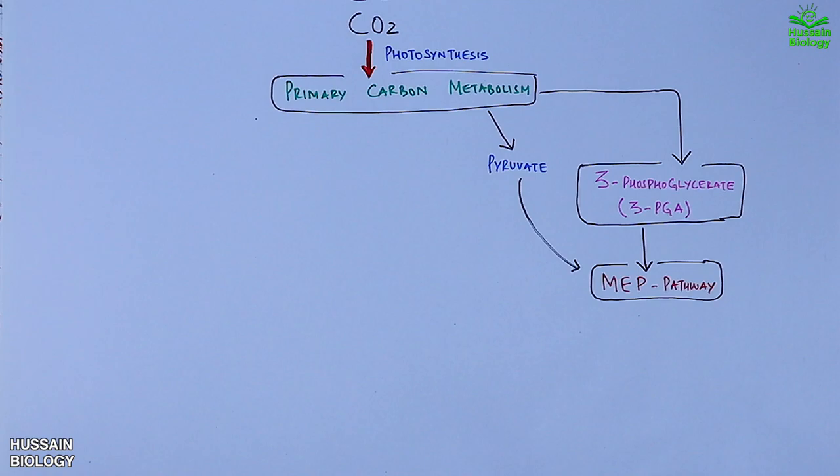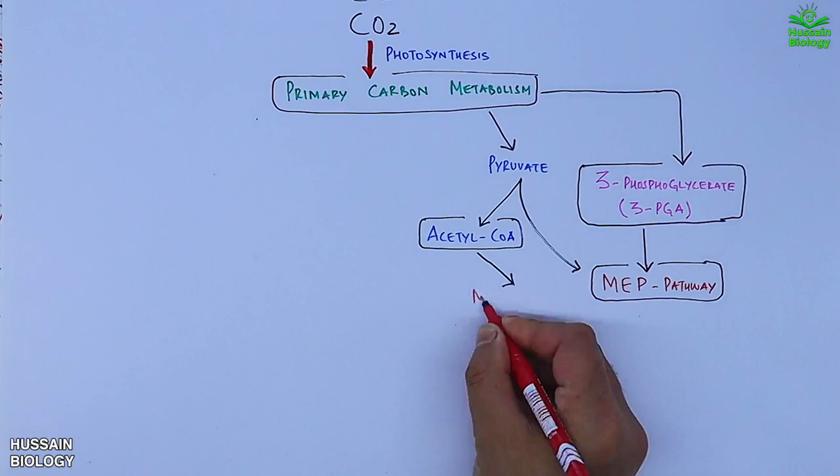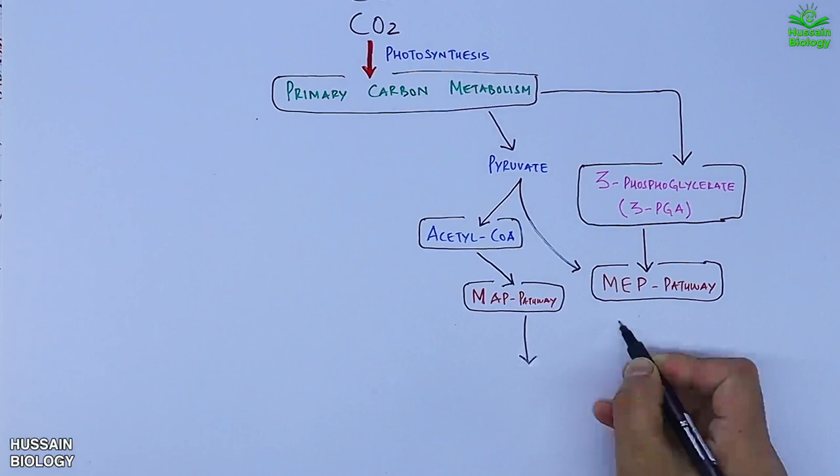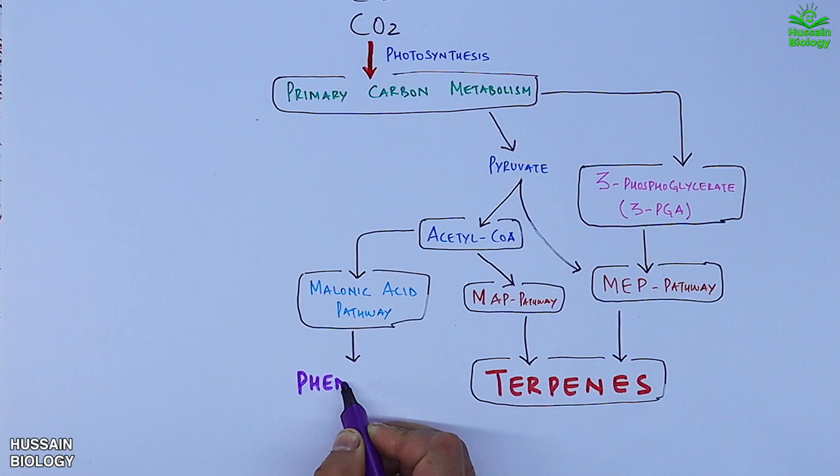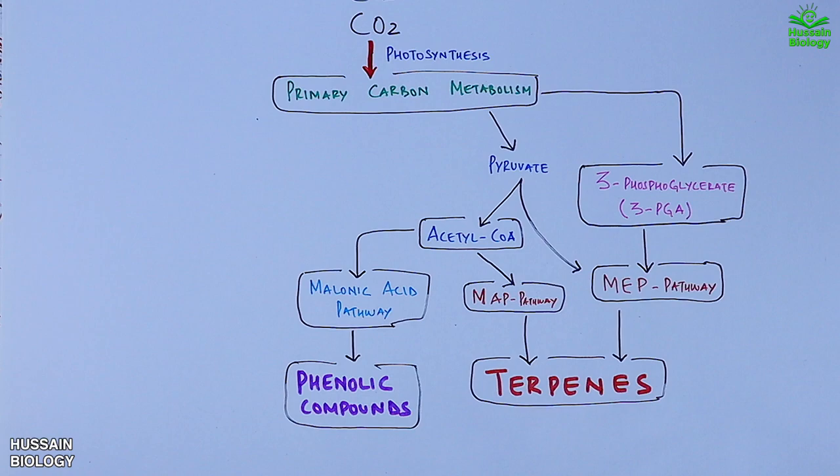From here, MAP and MEP pathways drive the synthesis of terpenes. Getting back to acetyl-CoA, from here it also leads to malonic acid pathway that drives the synthesis of phenolic compounds. Now we have only one secondary metabolite to synthesize, that's the nitrogen-containing compounds. From the primary metabolism we get the formation of erythrose 4-phosphate that leads into shikimic acid pathway.